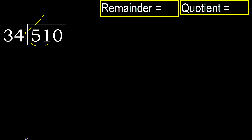34 multiplied by which number is nearest to 51 but not greater? 34 multiplied by 2 is 68 — it's greater. Multiplied by 1 is 34 — it's not greater. Subtract: 51 minus 34 is 17.